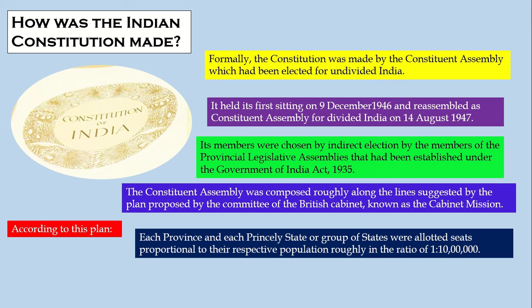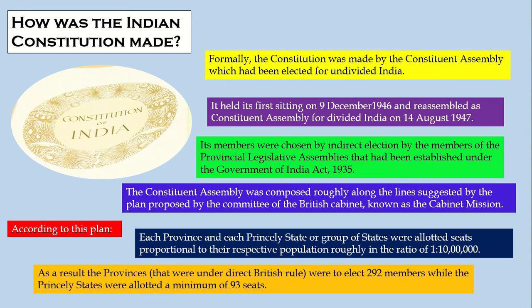Every princely state that had agreed to British rule in British India was also represented. As a result, the provinces under direct British rule were to elect 292 members, while the princely states were allotted a minimum of 93 seats.